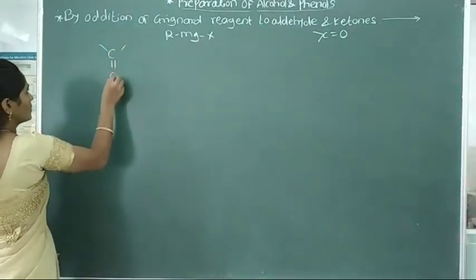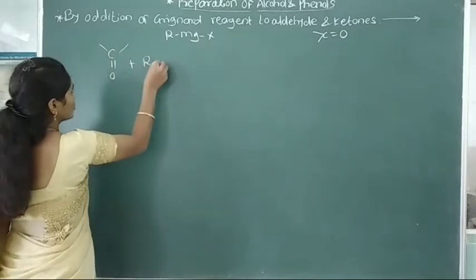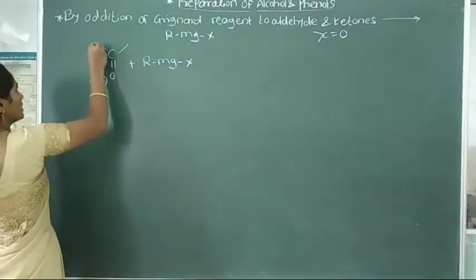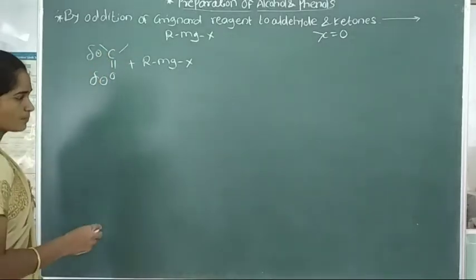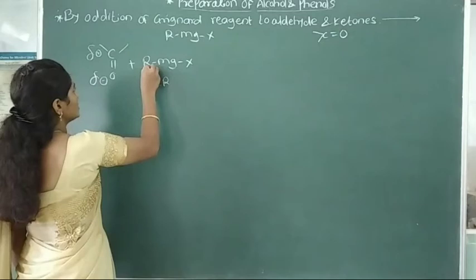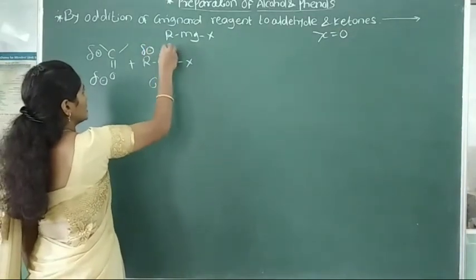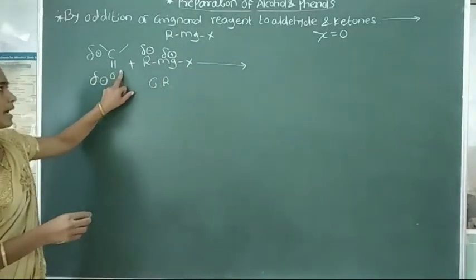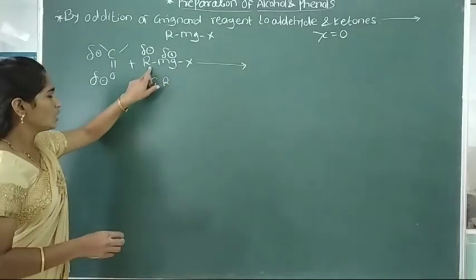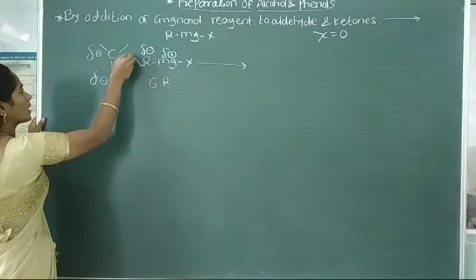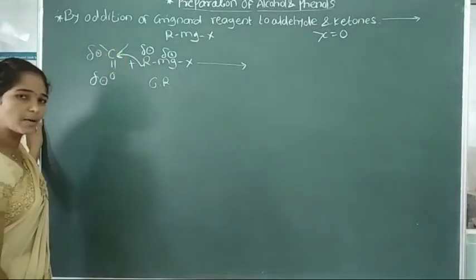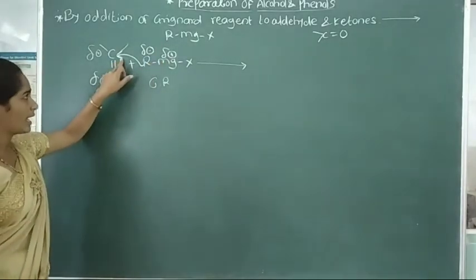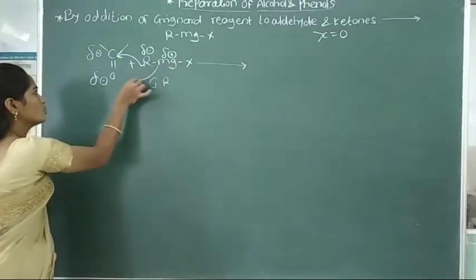In aldehyde and ketone there is a carbonyl group. In this carbonyl group, oxygen is partially negative and the carbonyl carbon is partially positive. In the Grignard reagent, the alkyl group is partially negative and MgX is partially positive. So the alkyl group in the Grignard reagent adds into the carbonyl carbon, and MgX adds into the oxygen atom.